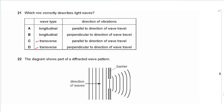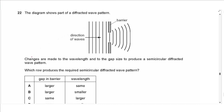Question 21 says: which row correctly describes light waves? Light is transverse — the direction of vibration is perpendicular to the direction of wave travel. So the answer is D.